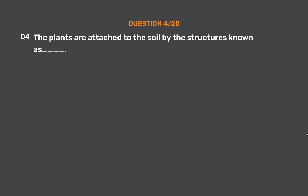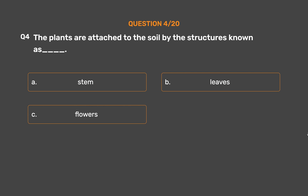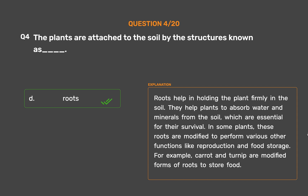Question 4: The plants are attached to the soil by the structures known as ___. Option A: Stem, Option B: Leaves, Option C: Flowers, Option D: Roots. The correct answer is Option D, Roots. Roots help in holding the plant firmly in the soil. They help plants absorb water and minerals from the soil, which are essential for their survival.